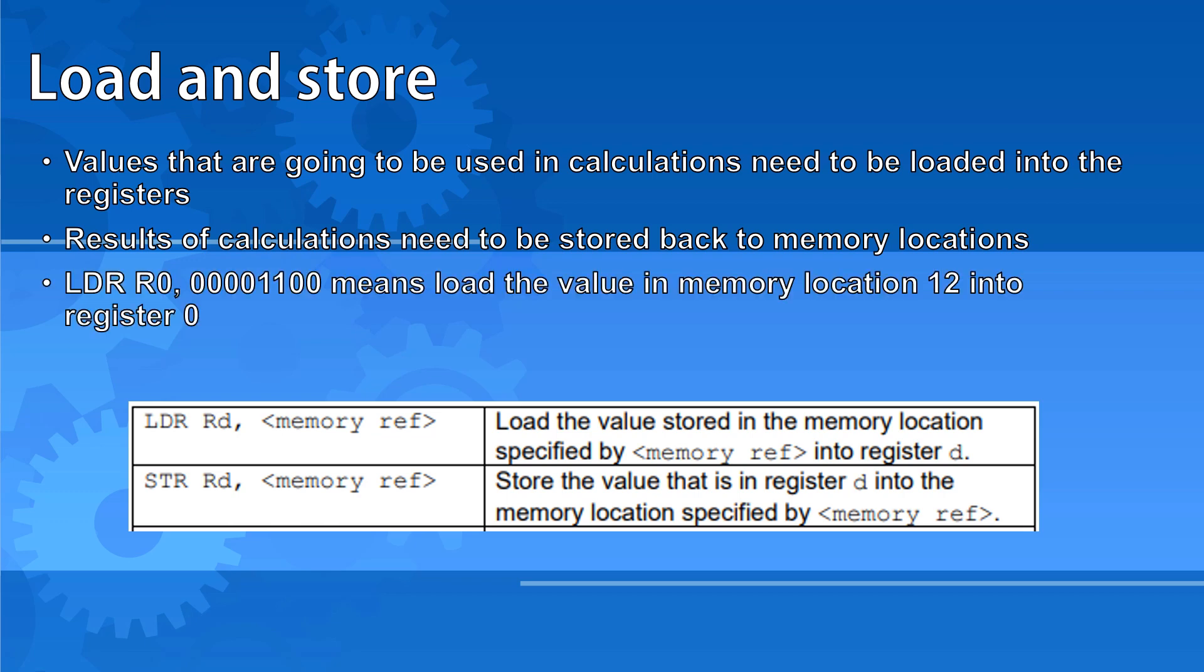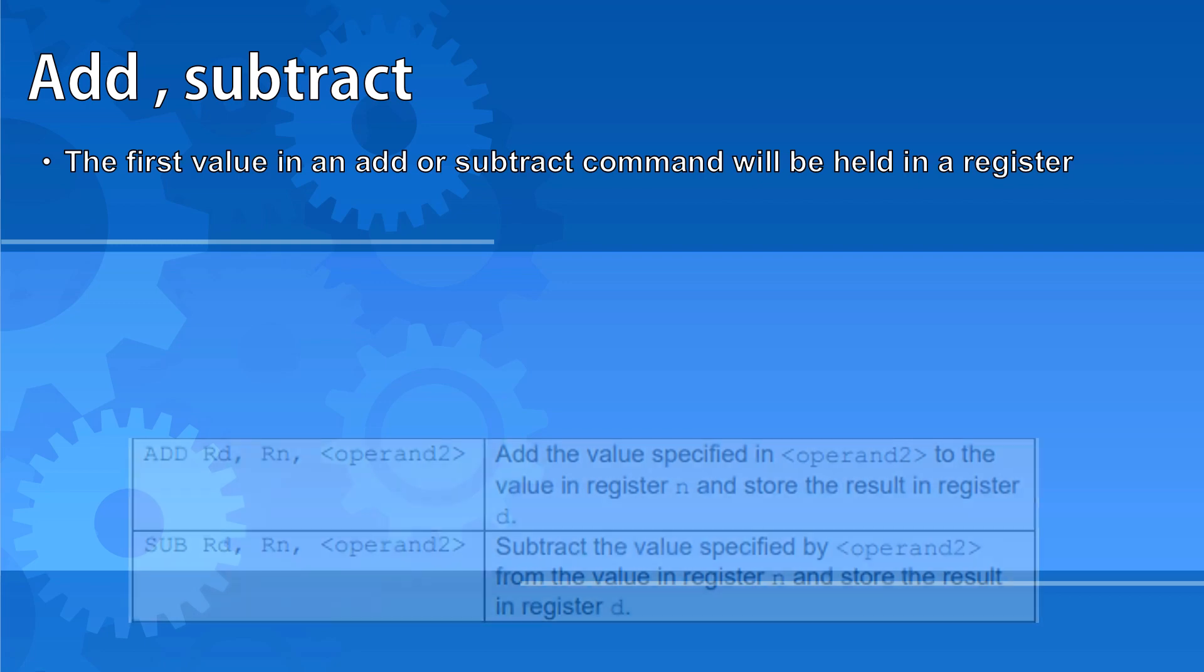So the command LDR R0,00001100 means load the value in memory location 12 into register 0. Now it's equally likely that might be given as a decimal number, but just remember that when we look at the actual values stored in registers, they are always stored in binary. So STR R1,3 would mean store the value in register 1 into memory location 3.